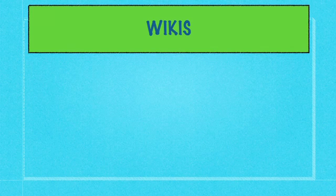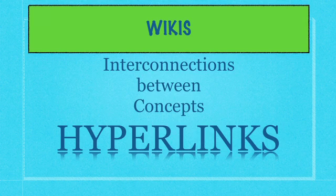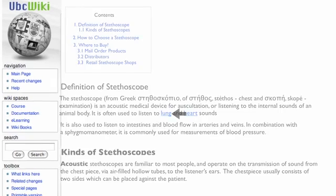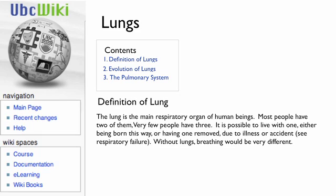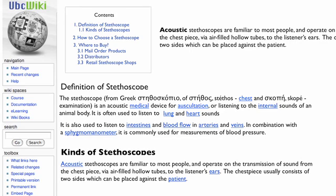The other thing that wikis do especially well is they help to form interconnections between concepts. This happens through hyperlinks. Here we have again our definition of a stethoscope. Another student comes along and sees that there are other pages devoted to lung and heart sounds, so they delete what they need to and replace these words with hyperlinks. Now another user can come along and just click on lung, which will take them to another page that somebody else has created — a definition of lung. Over time, other users come back and start to replace other terms with hyperlinks, and it starts to become a linked resource connecting so many other bits of information so that stethoscope is placed in context with everything else.